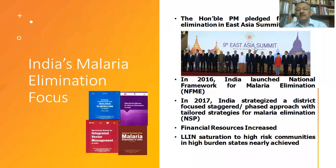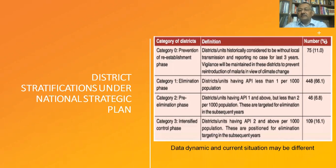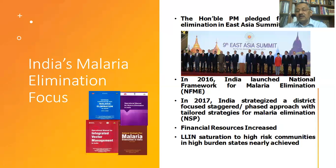Looking at the district-level stratification using 2015 data: Category 0 — no indigenous cases — already had 75 districts. Category 1, the elimination phase, had 448 districts. Category 2, the pre-elimination pink zone, had 46 districts. The high-burden area had only 9 districts. States and districts are being categorized based on current data to track which have achieved and which are yet to achieve malaria elimination milestones.